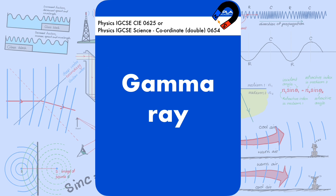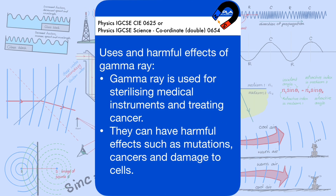Gamma rays are used for sterilizing medical instruments and treating cancer. They can have harmful effects such as mutations, cancers, and damage to cells.